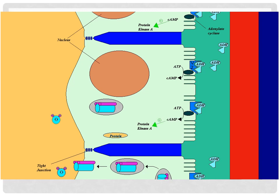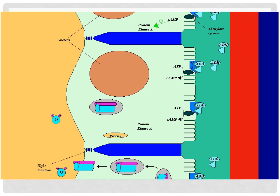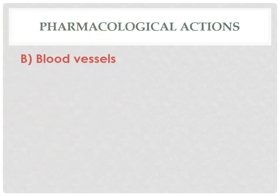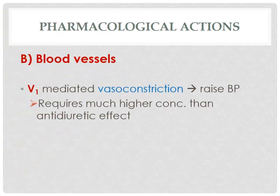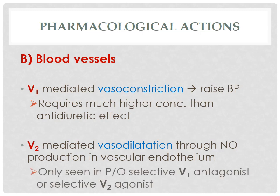This is an animation of ADH-mediated increase in water reabsorption in principal cells of the collecting duct of the kidney. On blood vessels, vasopressin causes V1-mediated vasoconstriction, which tends to raise blood pressure. Even at high concentration of ADH, V2-mediated vasodilatation may be seen, either in the presence of a V1 antagonist or a selective V2 agonist.